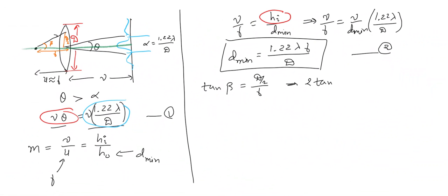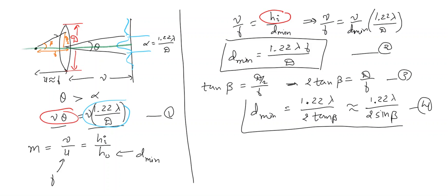So, tan of beta is d by 2 upon f. So, 2 tan beta is d by f. And, can we use it in equation 2? Of course, we can. And, then, what we get is d_minimum is equal to 1.22 lambda upon 2 tan beta. Now, for small angle, we can consider it as 1.22 lambda by 2 sin beta. And, this is the minimum allowed object size to be seen from the given microscope.